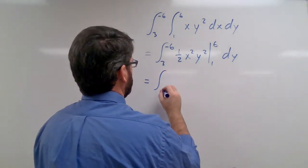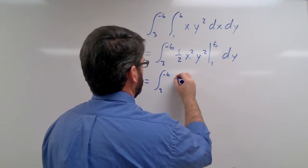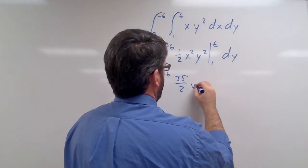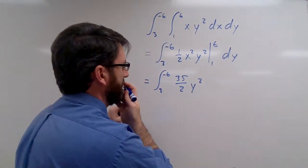So 35 halves, so this is the integral from 3 to negative 6 of 35 over 2 y squared dy.